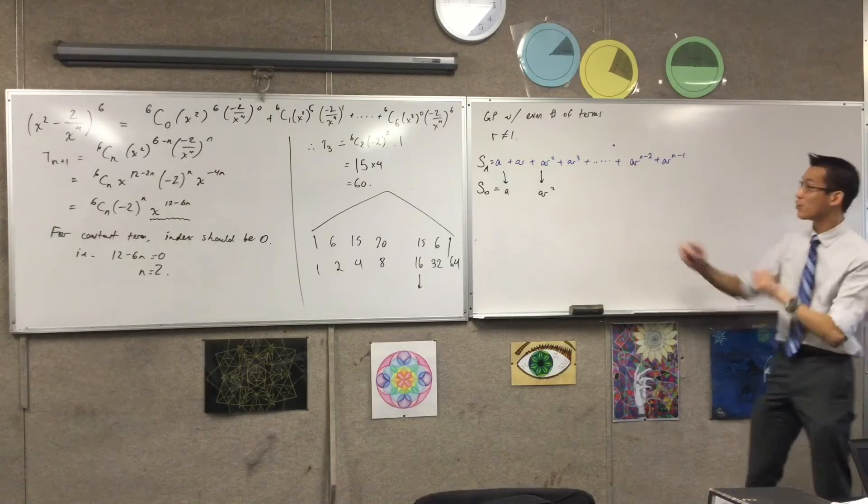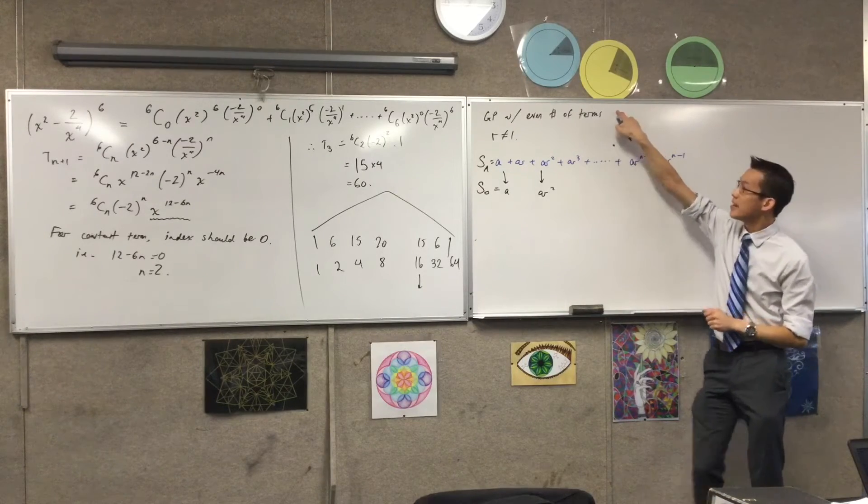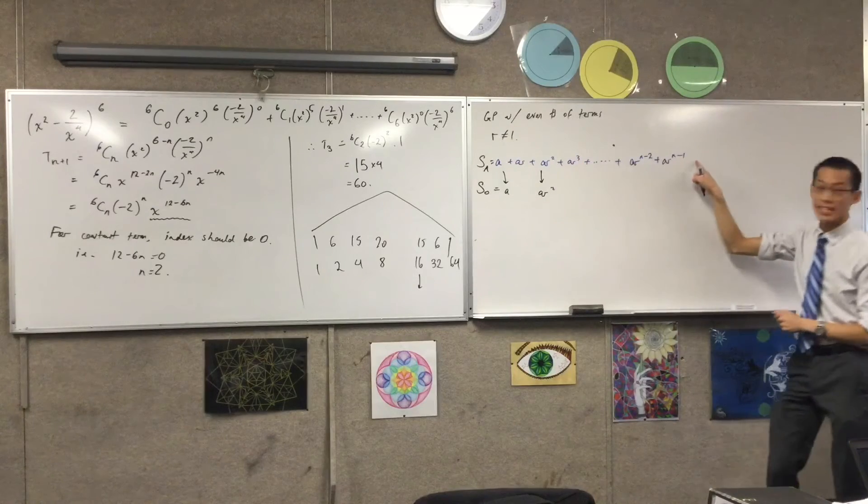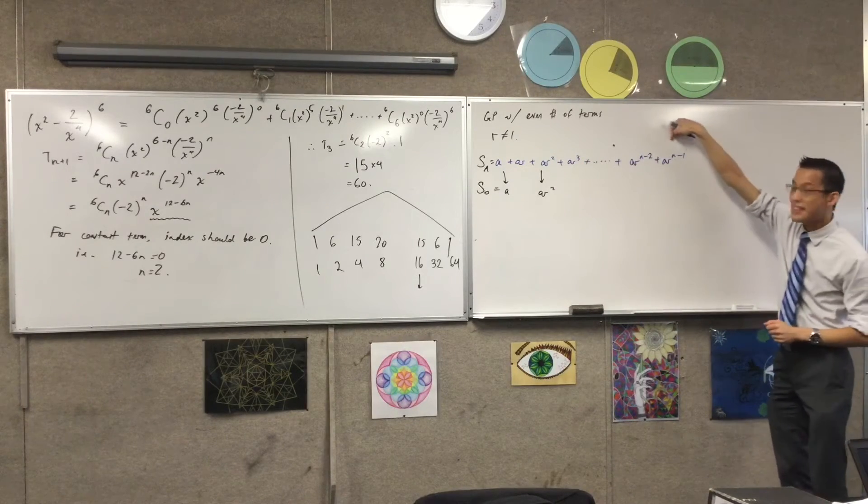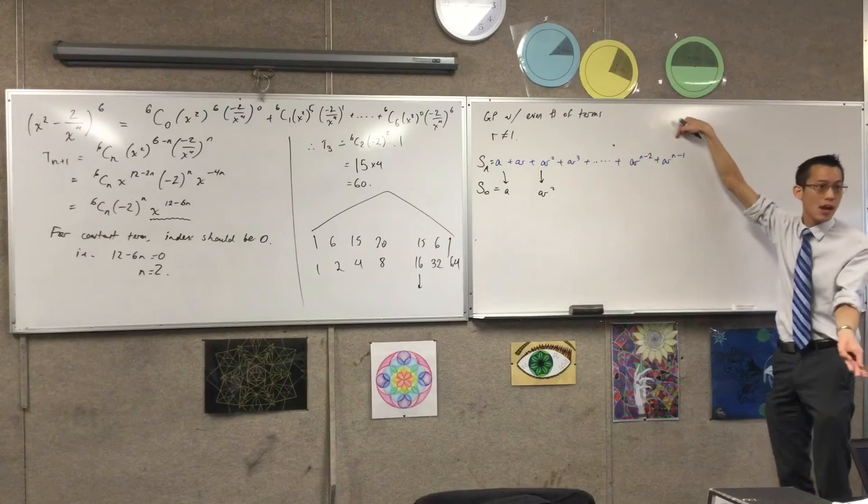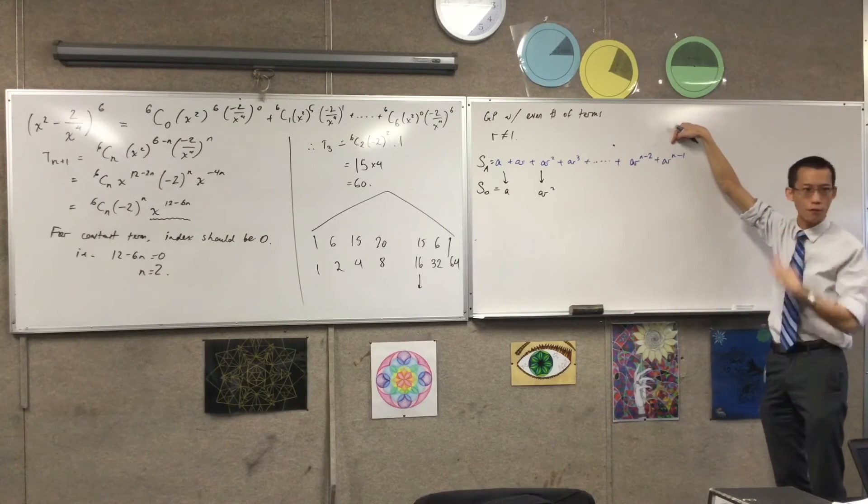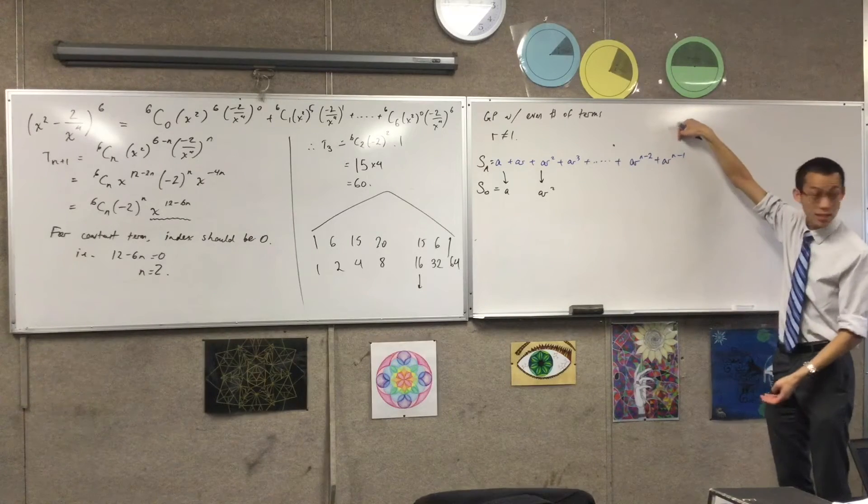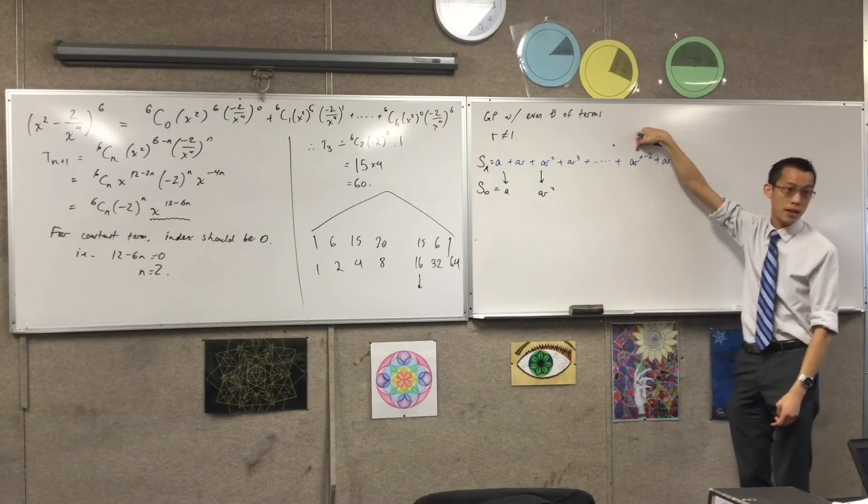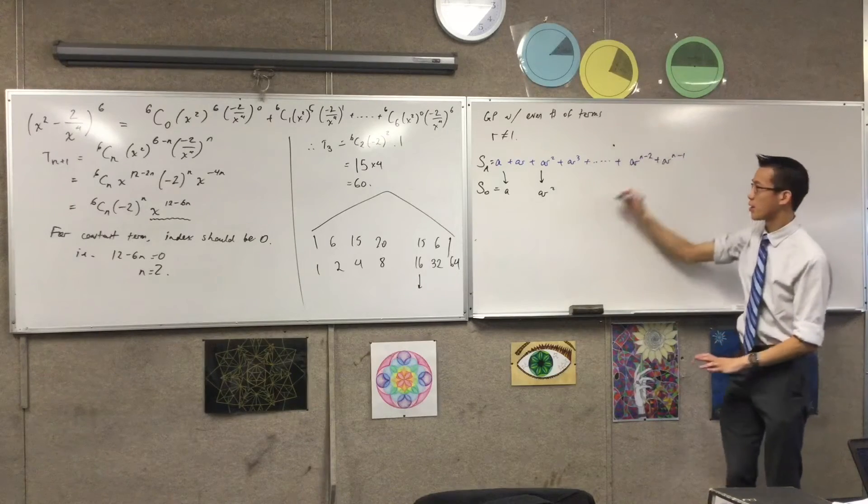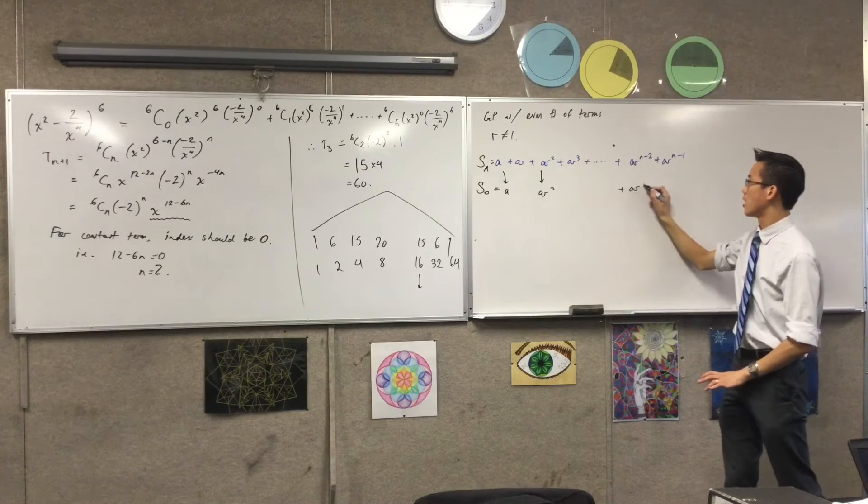Now, here's the thing. If I look back to the question, the whole GP has an even number of terms. So whatever that is, it's an even term, right? It might be the 20th term, or the 40th, or the 100th, but it's going to be even. That means this one has to be odd. Does that make sense? So the last term will be this guy.